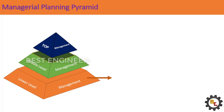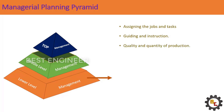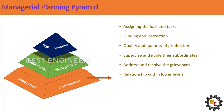The roles and responsibilities of lower level managers include assigning jobs and tasks to work floor workers, and monitoring and directing operative employees. They execute and coordinate day-to-day work given by middle level management, guide and instruct workers in daily activities, and follow quality and quantity of production. They supervise and guide their subordinates, help address and resolve the grievances of workers, and maintain good relationships and discipline within the workplace.